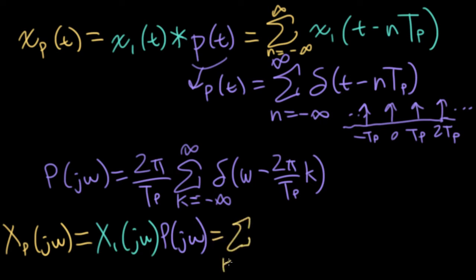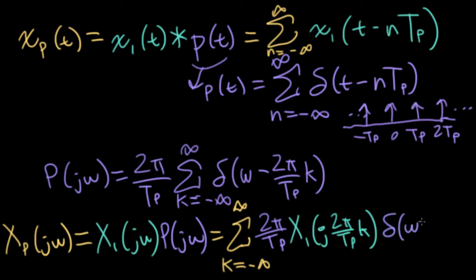So what does this look like? I'll have this giant constant sum over k. The 2 pi over t sub p can be pulled inside. The big x sub 1 j omega can be pulled inside. And when I do that, I'll use the simplification trick. Since this delta function only turns on at these points, I can substitute in for omega 2 pi over tp k.